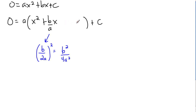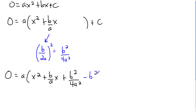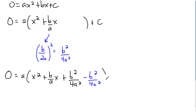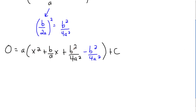What I'm going to do then is add and subtract that value. So: 0 equals a times the quantity x squared plus b over a times x plus b squared over 4a squared, minus b squared over 4a squared. I put them in different colors because I want to get rid of the blue one — the black terms inside will factor nicely.